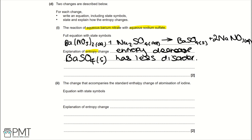Part D(ii): the change that accompanies the standard enthalpy change of atomization of iodine. We need to write the equation with state symbols and an explanation of entropy change. For atomization we form one gaseous iodine atom, so the equation is: ½I₂(s) → I(g).